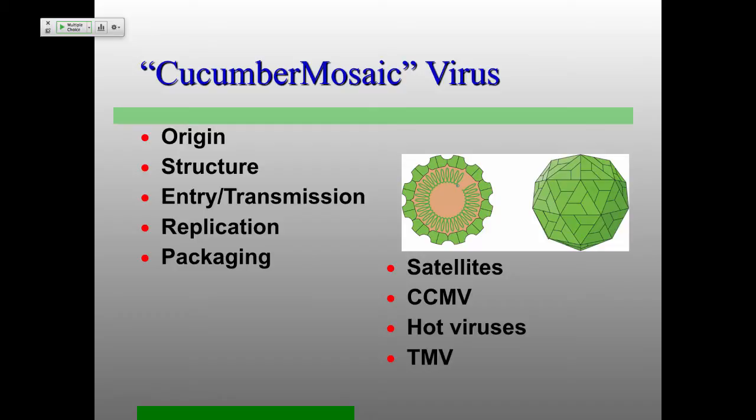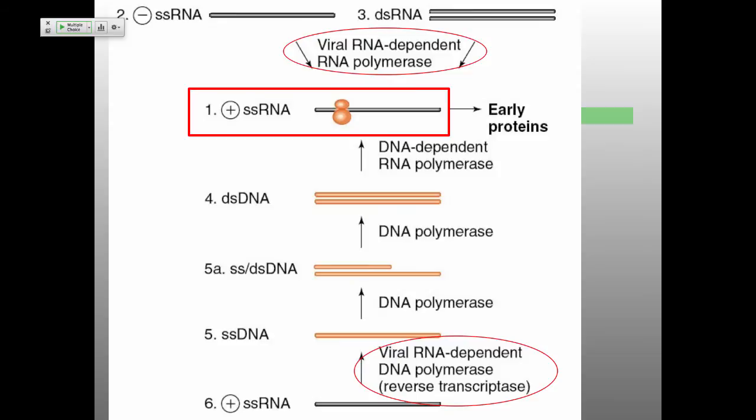We'll also cover cowpea chlorotic mottle virus, CCMV — one of the viruses I keep showing as a picture at the beginning of my lectures — as well as 'hot viruses' that confer heat tolerance, and then tobacco mosaic virus. Just as a reminder, we're talking about RNA viruses here — and I need to get rid of some incorrect Baltimore classification numbers on these slides.